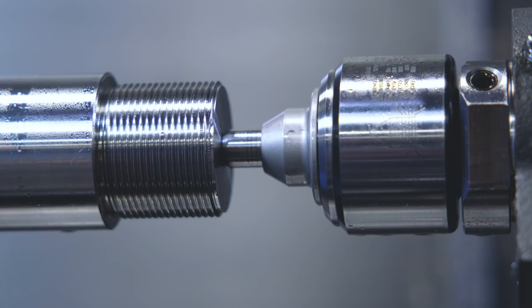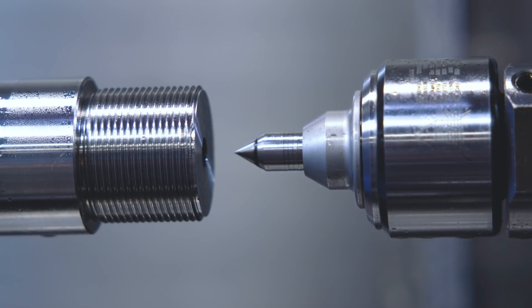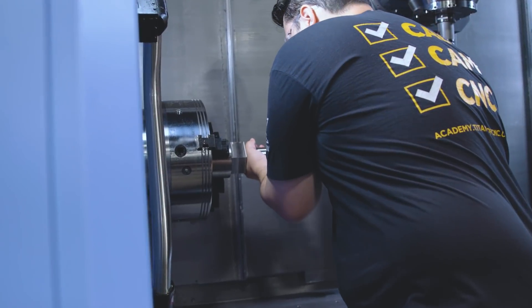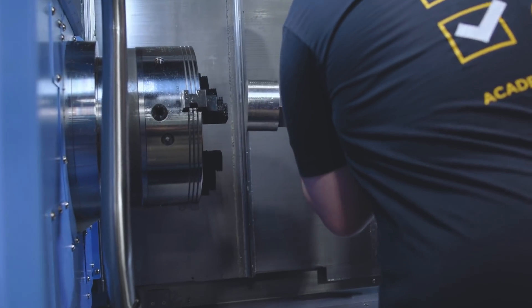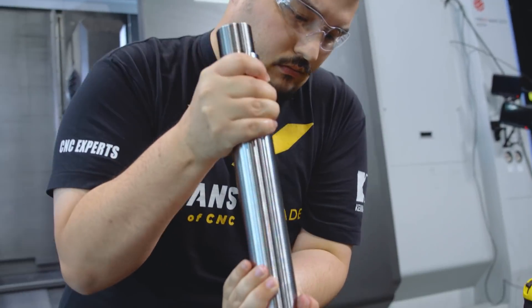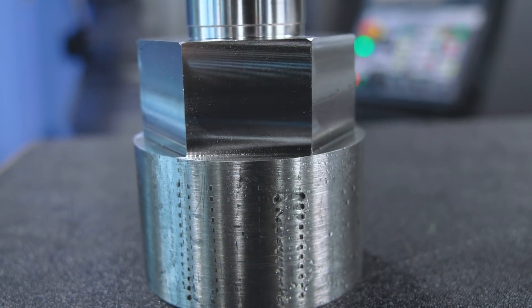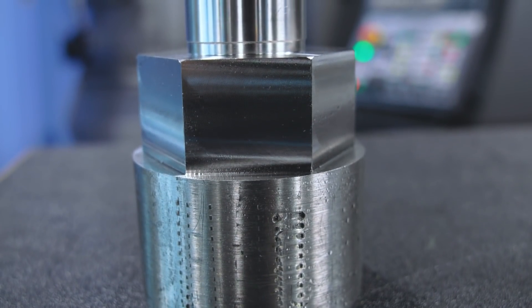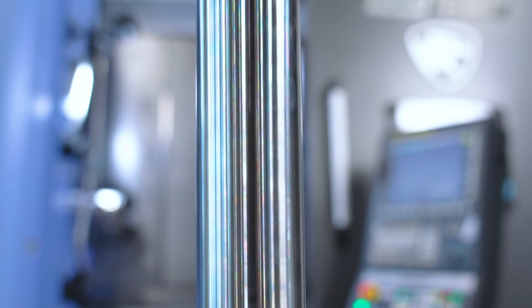So the part's all done on this side. I'm going to retract the tail center and then we're going to unclamp the part. I'm going to put in some new jaws so I can clamp down to my finished OD surface and then we're going to finish up the back side and get it ready for Scott.